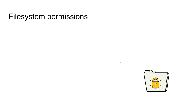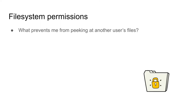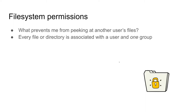Your user and the groups you're in influence which files you can access on the computer, and this is enforced through something called file system permissions. What prevents me from peeking at another user's files — maybe they have sensitive documents in their home directory? To answer that, we need to understand that every file and directory on the computer is associated with a user and one single group.